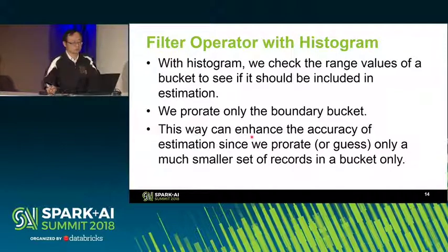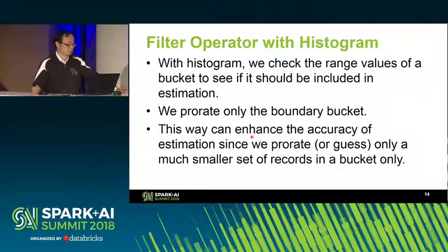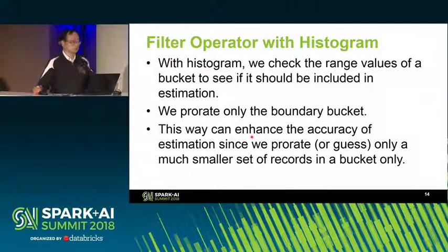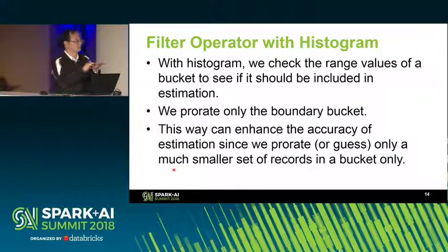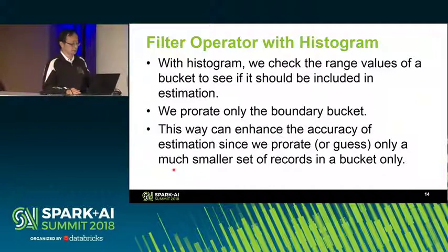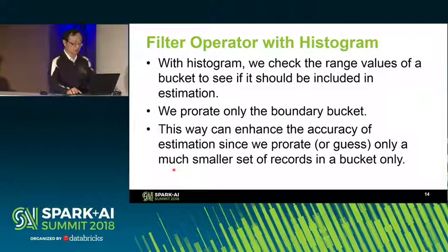In Spark 2.3 with histogram, we check the range value of each bucket to see if it should be included in our computation. We check each bucket one by one. We may need to interpolate, but only on the boundary bucket — not across the entire column range.